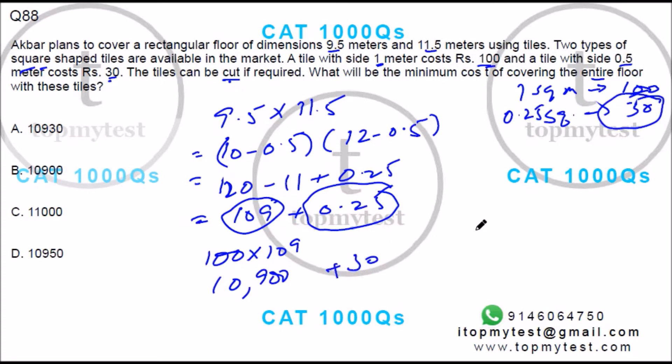So the total cost will be 10,930. Option A will be your correct choice. That finishes the question. All you need to be careful here was for the last small extra portion you can use this tile. Everything else can be filled with the large tile because otherwise here you'll have to buy the full tile and then cut it and waste the rest part.